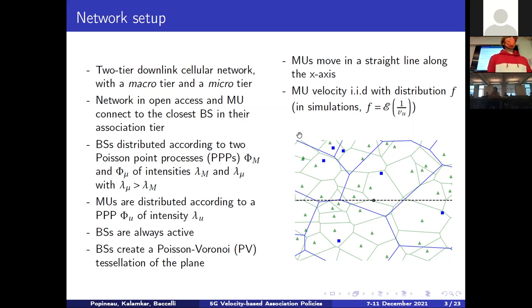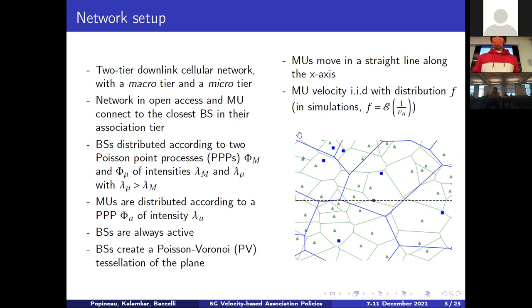We assume base stations are always active, so we do not consider standby modes or transmission failures. Because we are under a Poisson point process setup, by isotropy and homogeneity we can assume mobile users move in a straight line along the x-axis. Mobile user velocities are i.i.d. with distribution f — for most simulations we use an exponential distribution with scale parameter v_u, but this works with any distribution with infinite support. An illustration shows the mobile user as a black dot moving along a black trajectory, with blue macro cells and green micro cells forming two overlapping tiers. Our goal is to devise an association policy choosing between the blue or green tier based on user velocity.